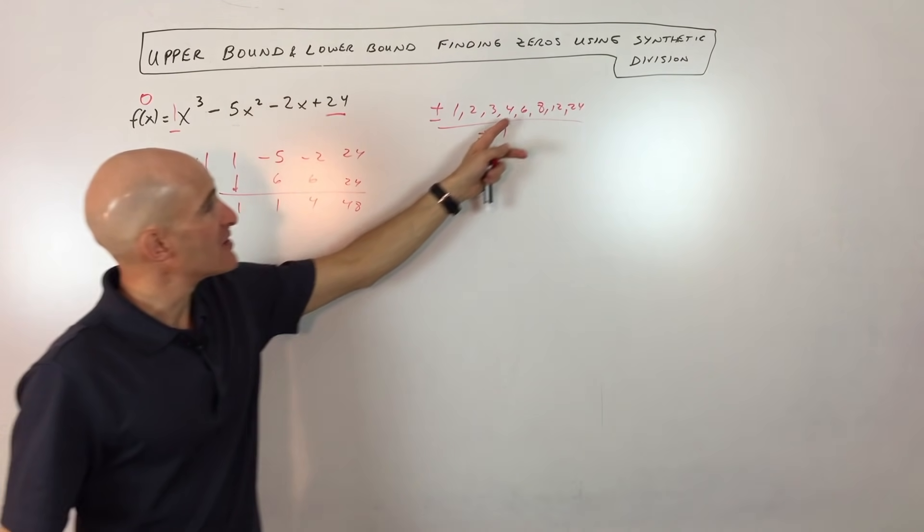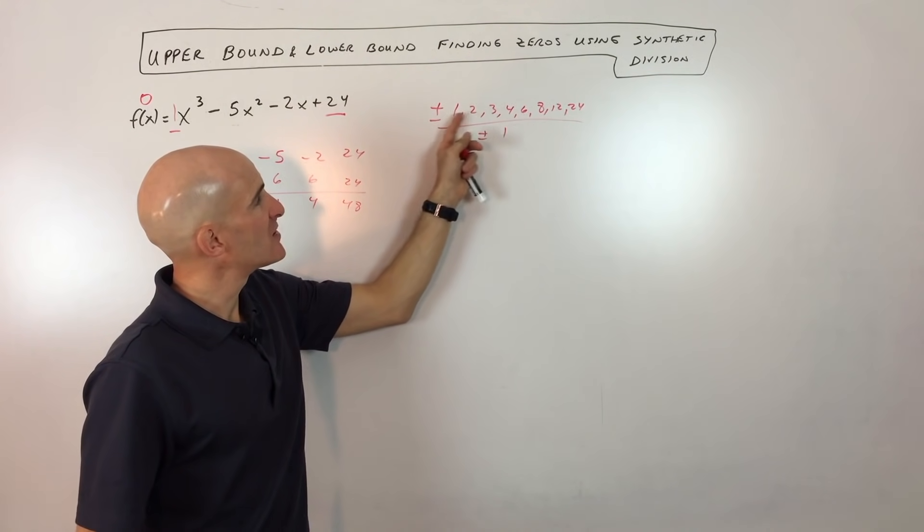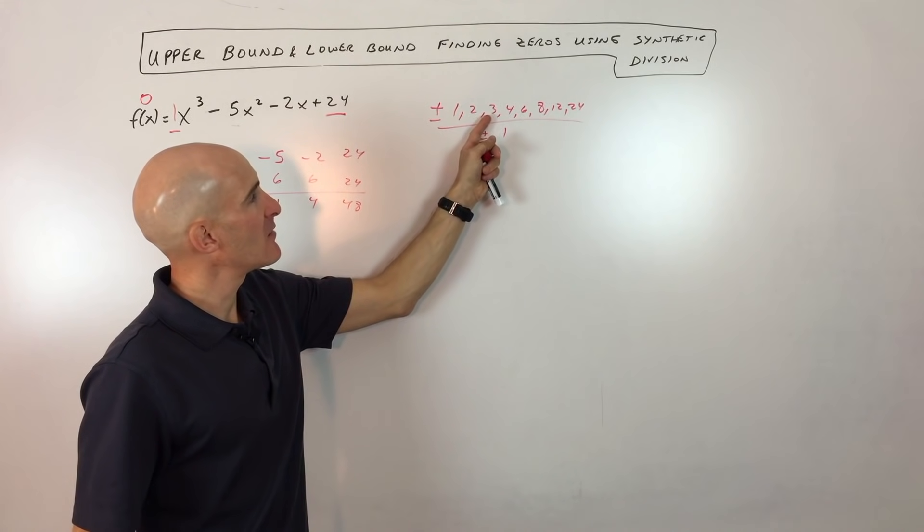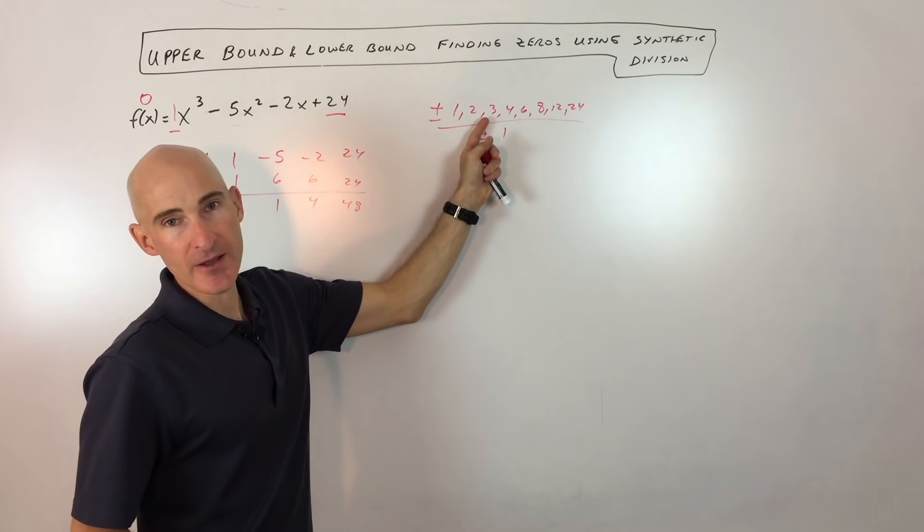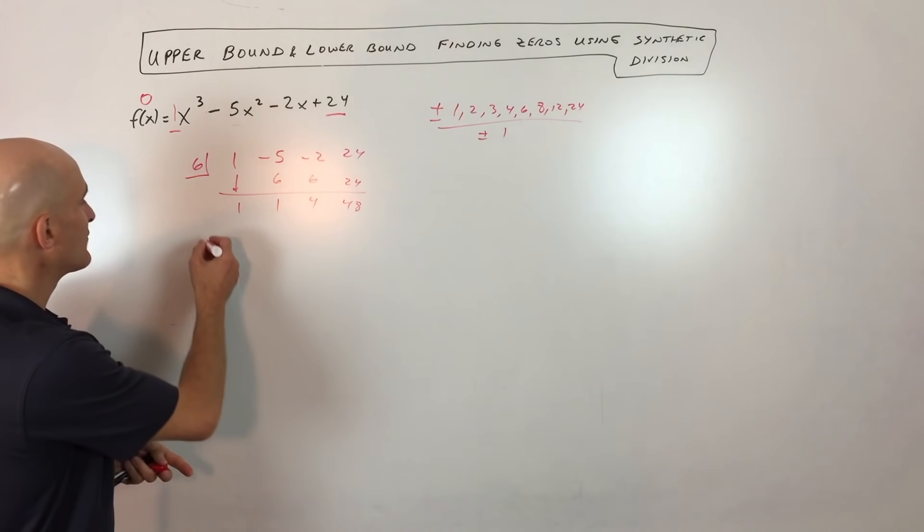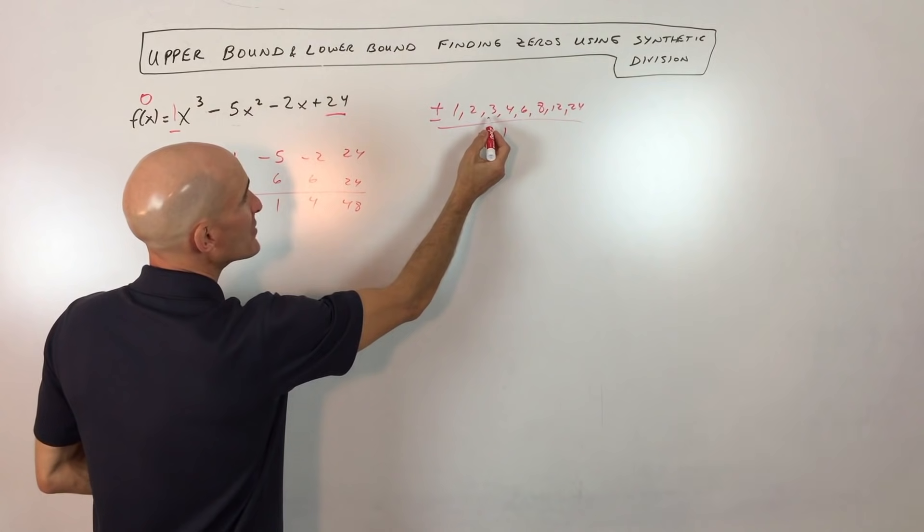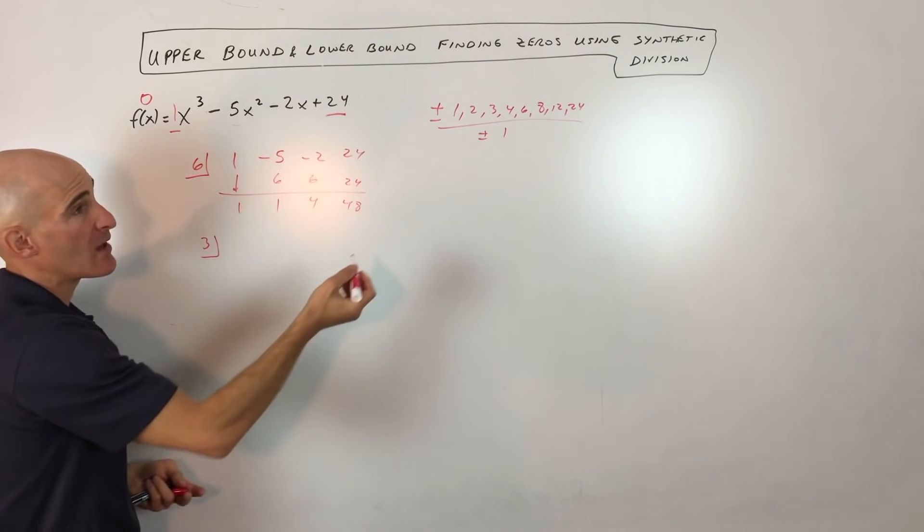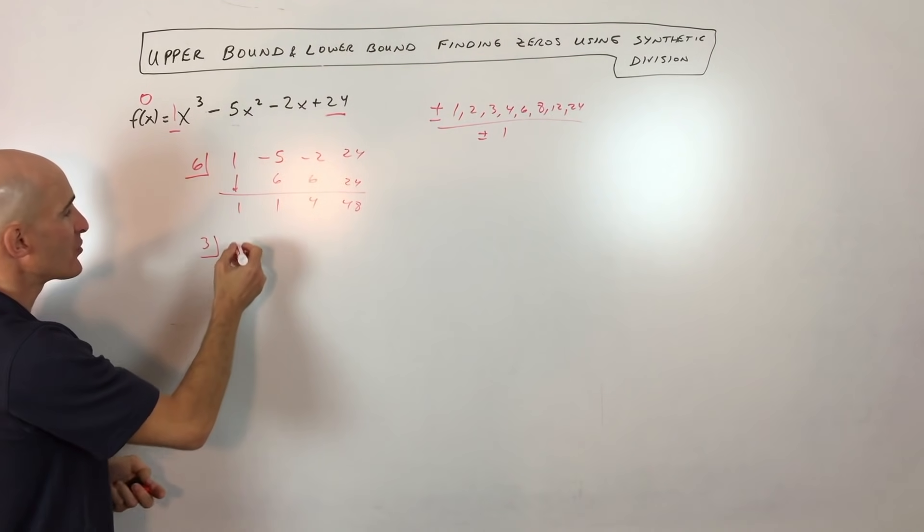So what I would do then from there is I'd say, well, let me see if I can split the difference here again. Let me see if maybe I pick either two or three. I'm going to just pick three. So let's do synthetic division again with three. If this ends up being an upper bound, it's going to eliminate three and four. Maybe I should have checked two, but I'll just check three here.